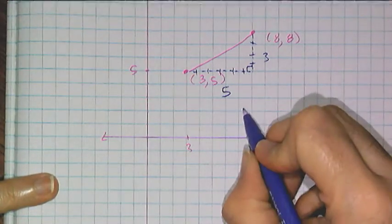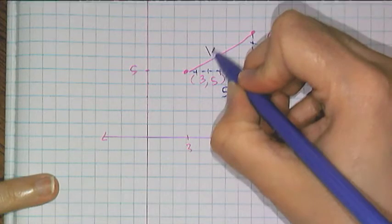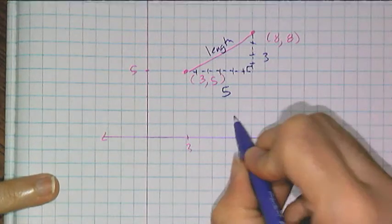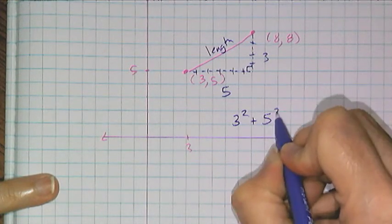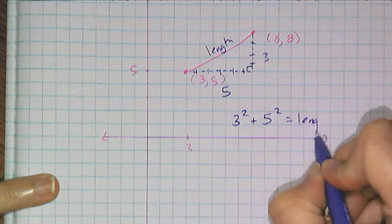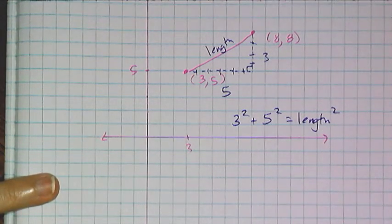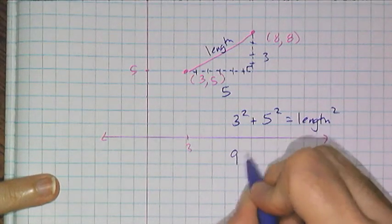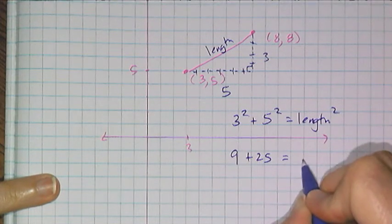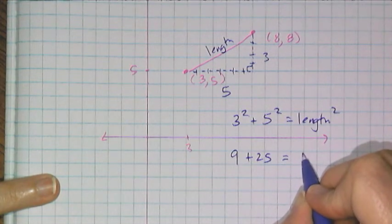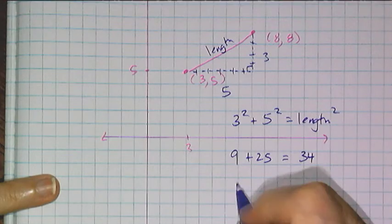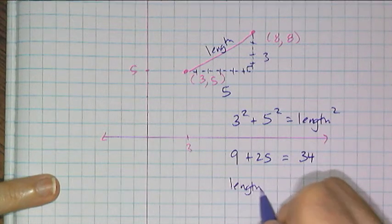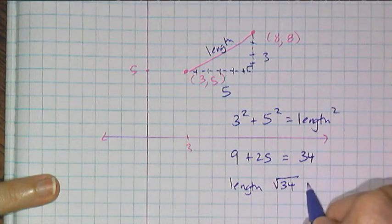So I can say that my unknown length is going to be three squared plus five squared equals that length squared, right? And then I get nine plus 25 equals 34. So therefore the length that I am looking for is the square root of 34 units.